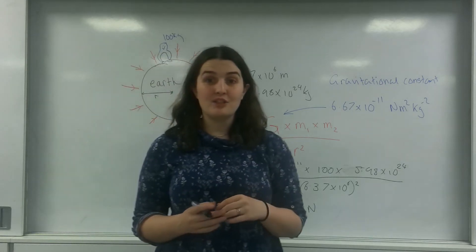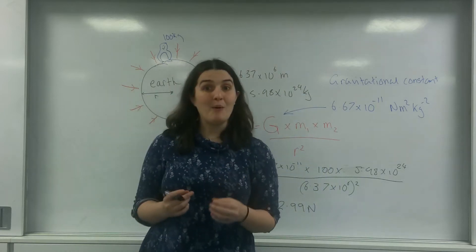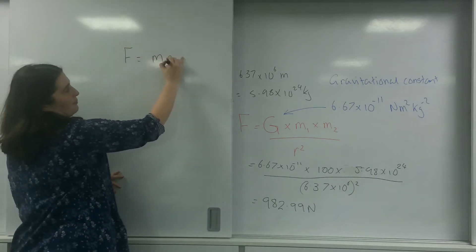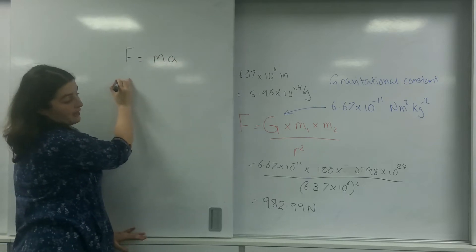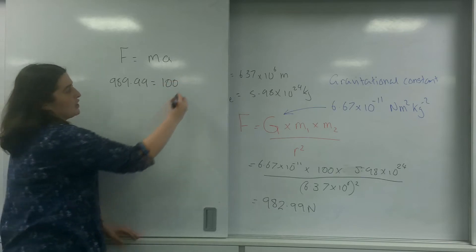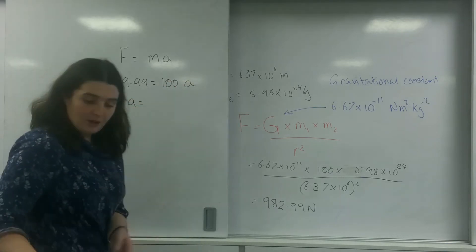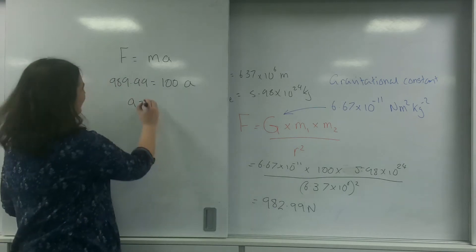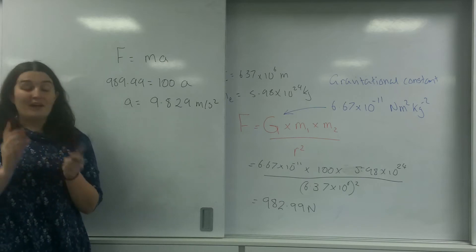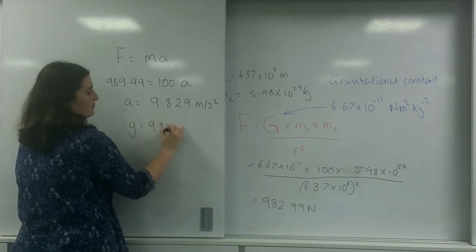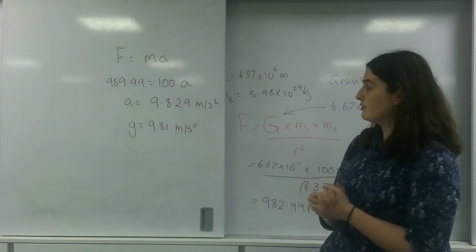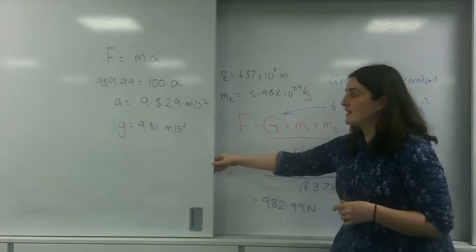Now I'm going to prove something. I'm going to use Newton's second law, F = ma, to find out how much this penguin is accelerating towards the centre of the Earth. So F = ma: the resultant force is 982.99 newtons, and the mass of the penguin is 100 kg, giving an acceleration of 9.829 metres per second squared. This looks very, very close to what we refer to as g — the gravitational field strength. So this value of g actually comes from this calculation, from Newton's Law of Gravitation.